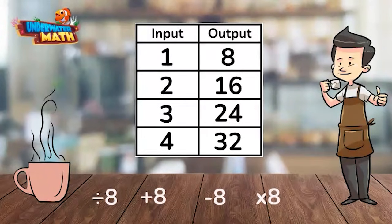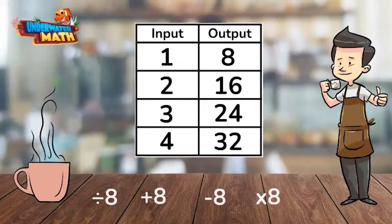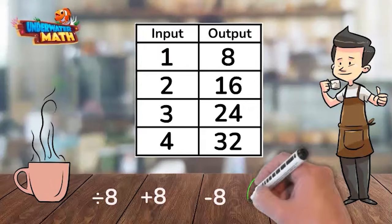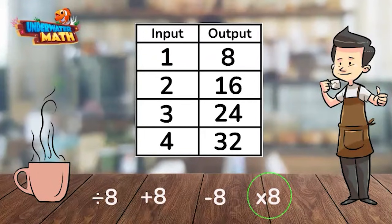1 times 8 is equal to 8. Let's see if that works for other input values. 2 times 8 is equal to 16. So far so good. 3 times 8 is equal to 24 and 4 times 8 is equal to 32. We've identified the rule again. Great job.